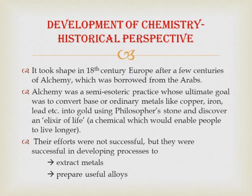Now we learn the development of chemistry and its historical perspective — how it started. Chemistry took shape mainly in the 18th century in Europe, after a few centuries of alchemy which was borrowed from the Arabs. Alchemy was a semi-esoteric practice, meaning few people studied or followed it.